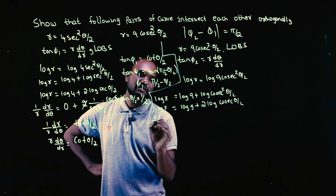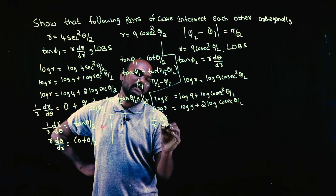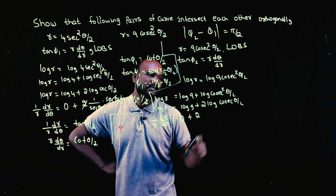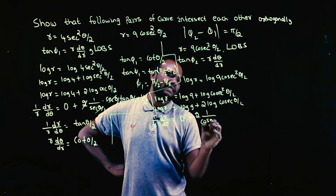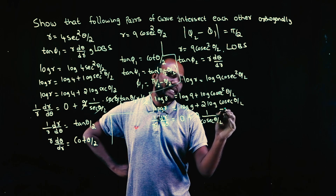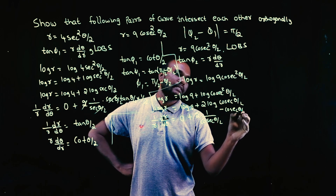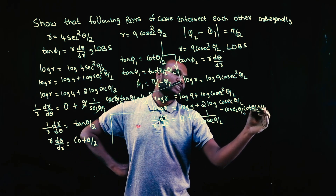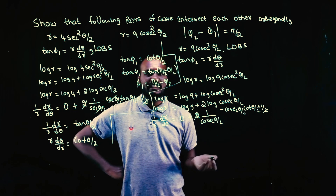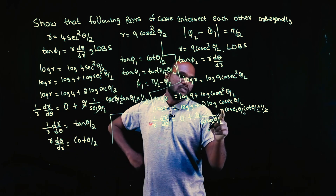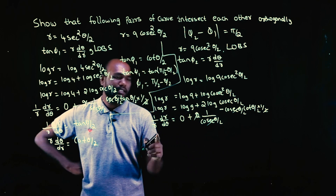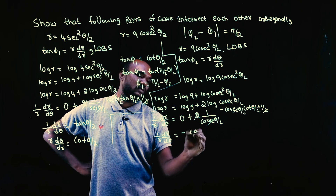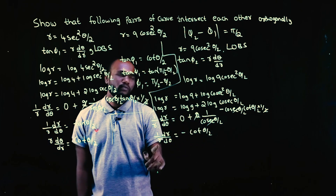Now differentiating: the differentiation of log r is (1/r)(dr/dθ), and log 9 differentiates to 0. Then plus 2, keeping it: log differentiation gives 1/cosec(θ/2), and the differentiation of cosec(θ/2) is −cosec(θ/2)cot(θ/2), and the derivative of θ/2 is 1/2. The 2s cancel and cosec cancels, so (1/r)(dr/dθ) = −cot(θ/2).